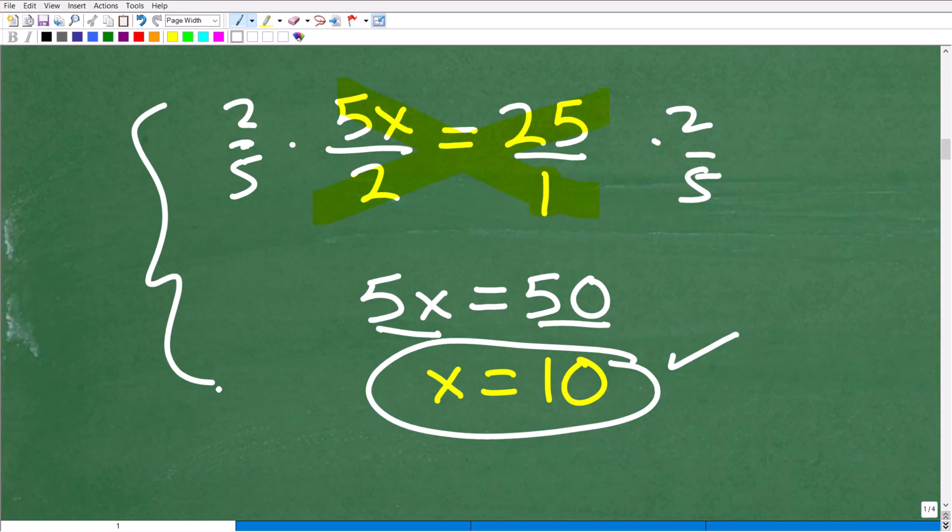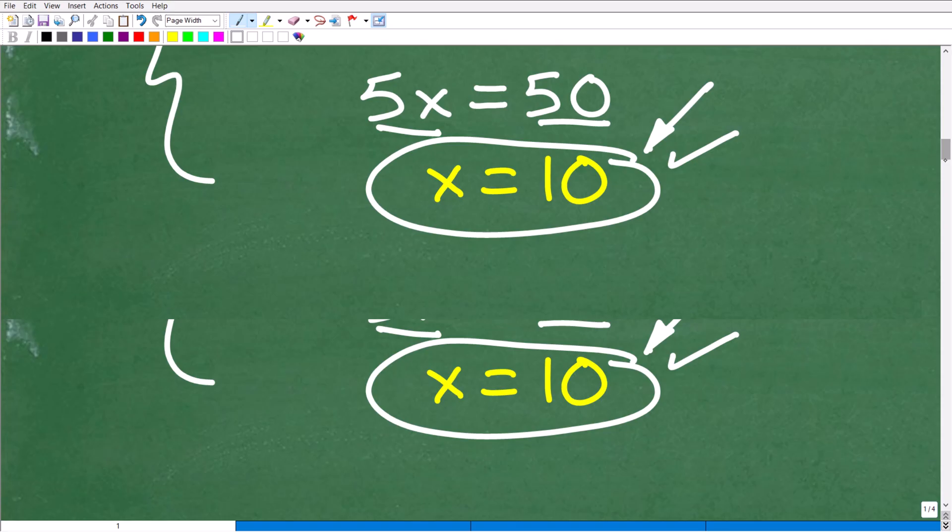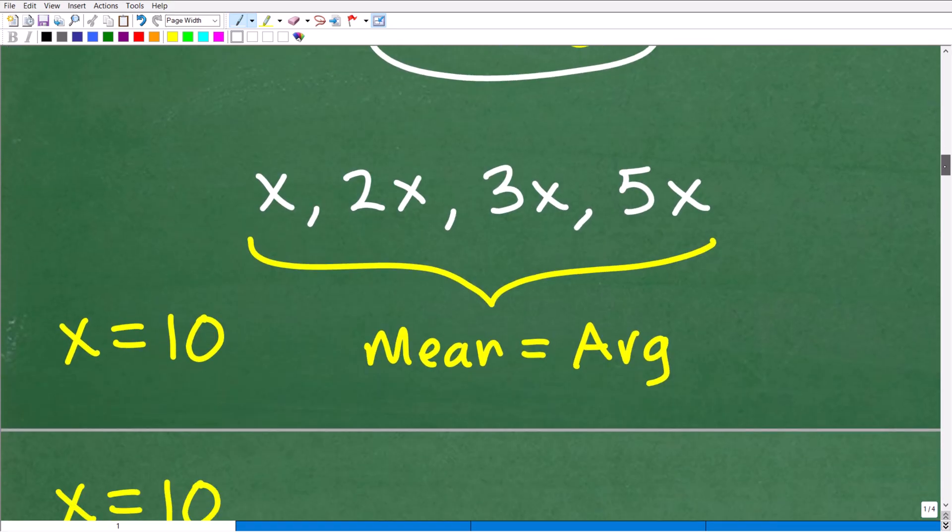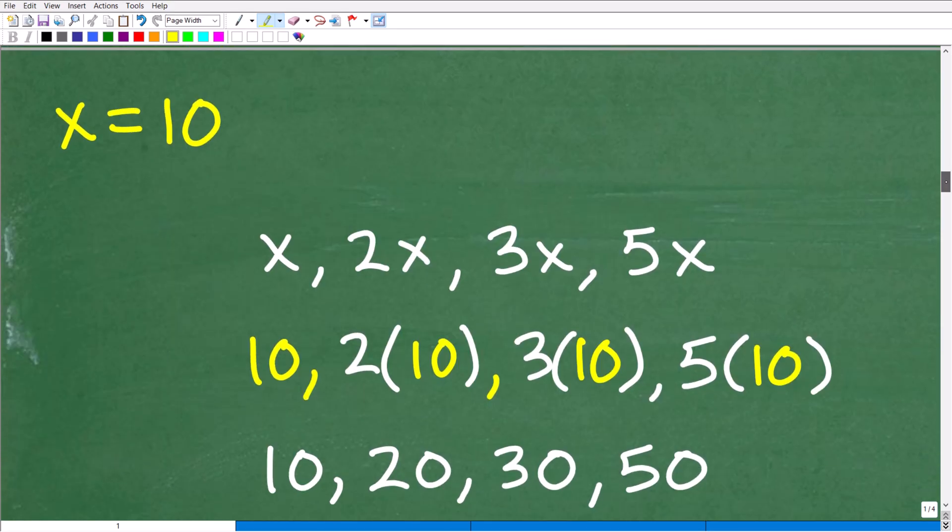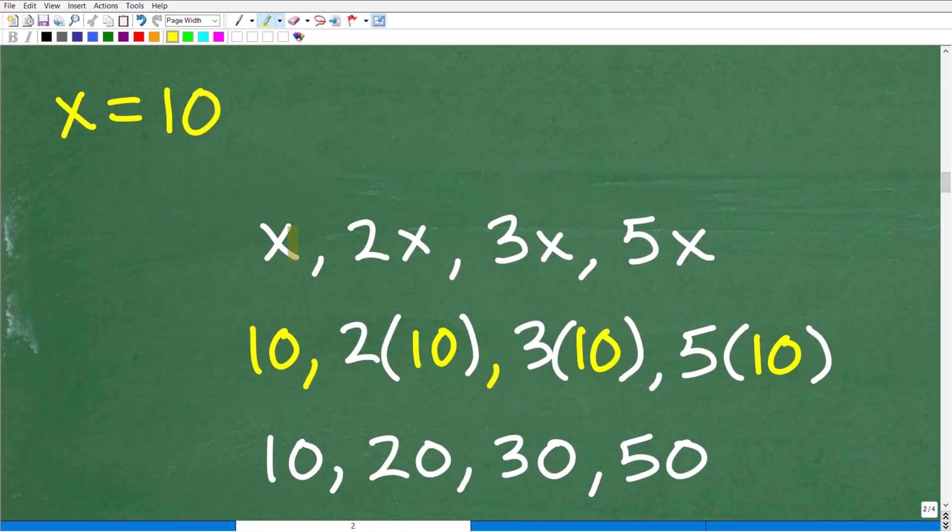So x is equal to 10. This is really going to be the key now to finishing the problem. Remember, our values is x, 2x, 3x, and 5x, but now we know x is equal to 10. So we're just going to plug in for this x, 10. We're going to replace all these x's with 10 and get actual values here, and then we'll find the average. So x is equal to 10. We're going to replace all these x's with 10s. You can see that here.